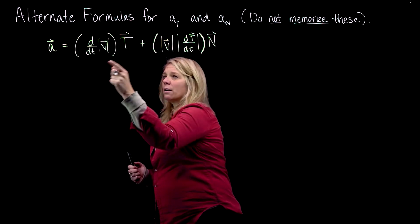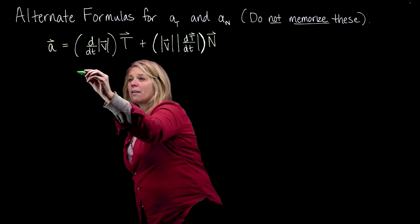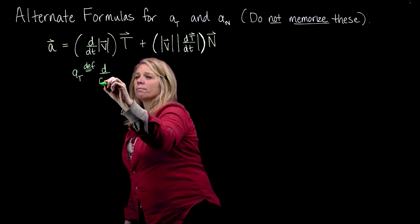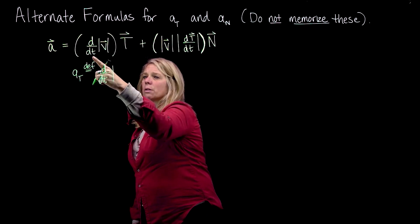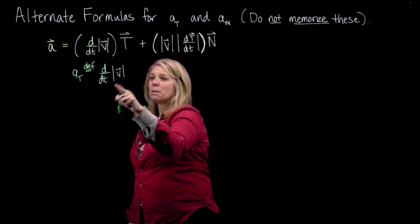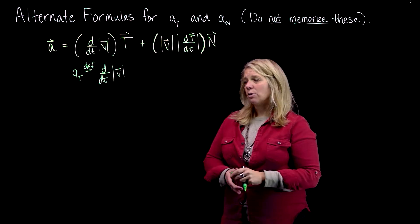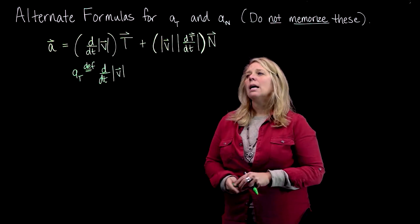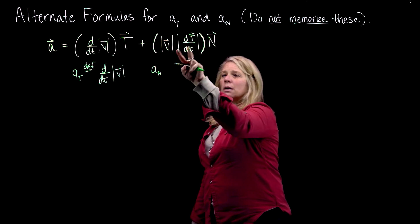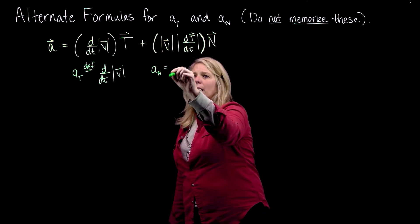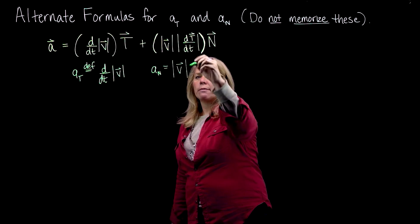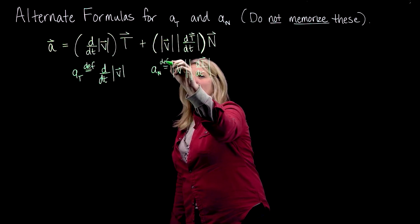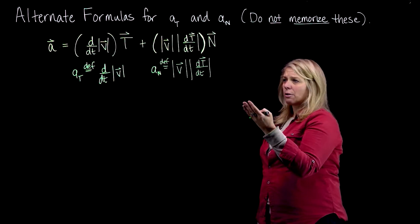The scalar times the T vector is our A sub T. So from the definition, A sub T is defined to be this expression here — the rate of change with respect to time of speed. We did the differentiation and substitution, and we call that the tangential component of acceleration because it's the scalar times the unit tangent vector. The normal component of acceleration is the scalar times the normal vector — speed times rate of change of the unit tangent vector.